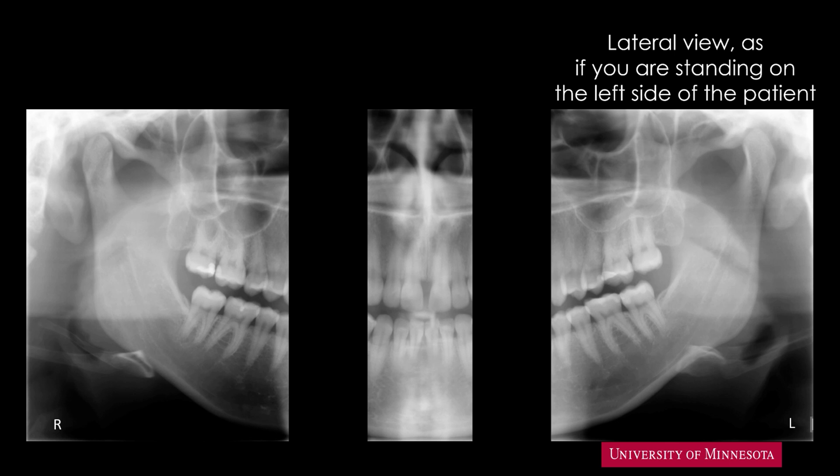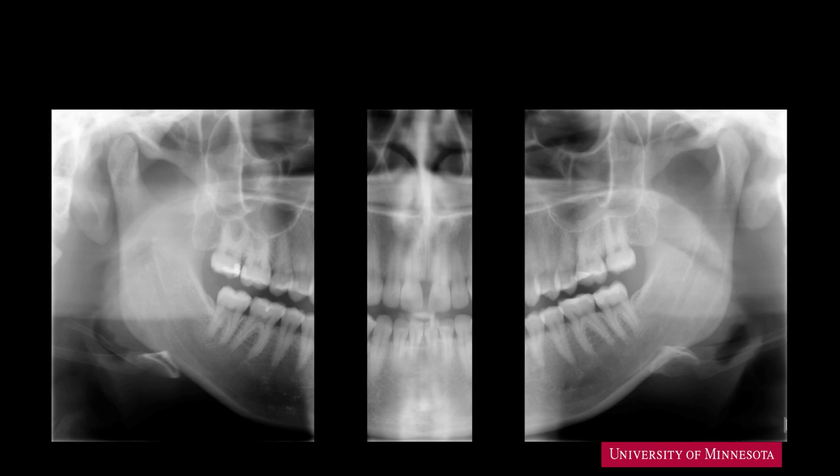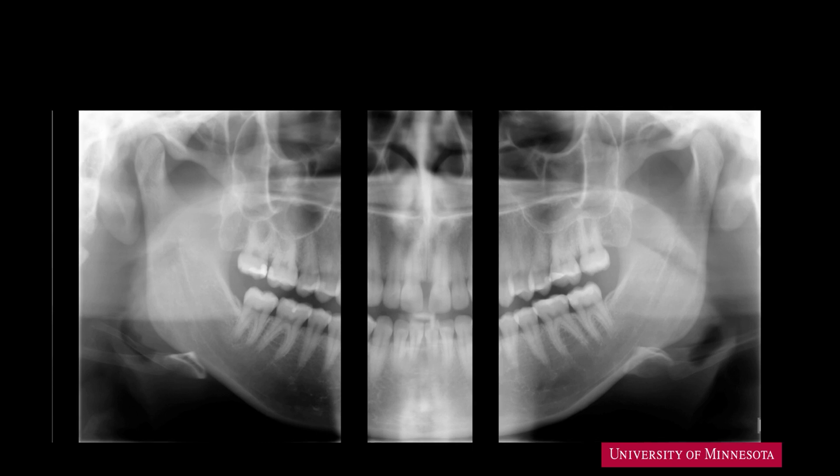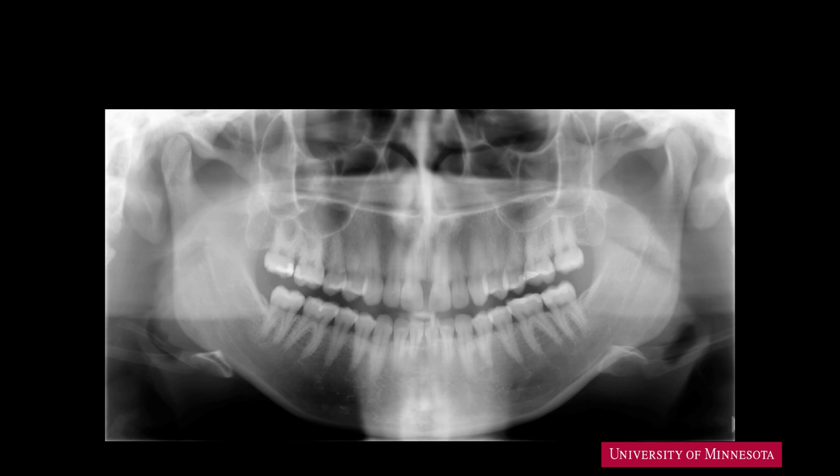Some other structures, such as the hyoid, may be recorded twice. If we stitch the three images into one, we get a panoramic presentation as seen here. Let's use this image to learn several critical radiographic landmarks.